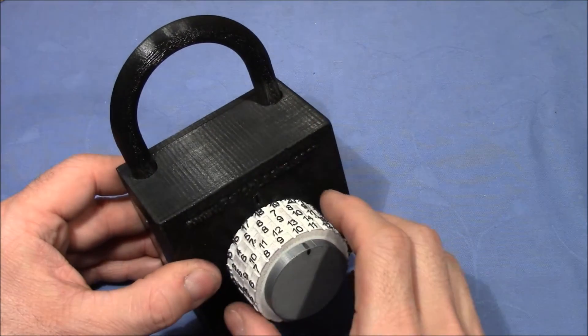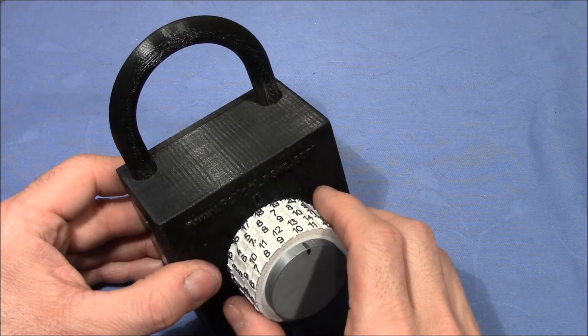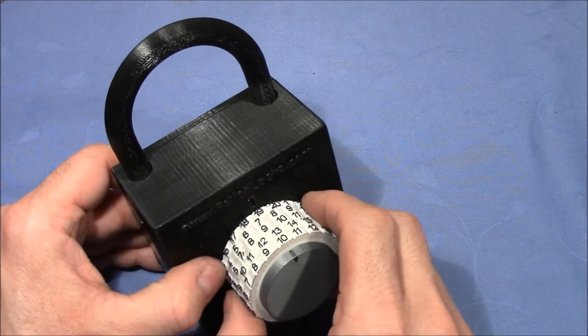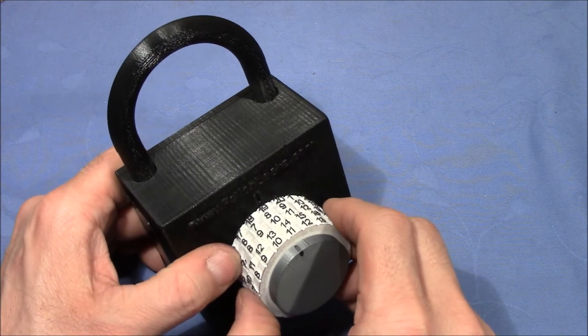The knob lowers a bar that is on the actuator and then it engages with the gates on the inner wheels. So you have to dial in the right code.